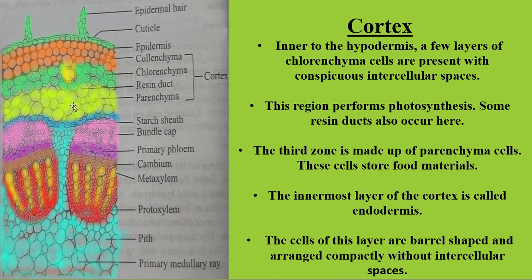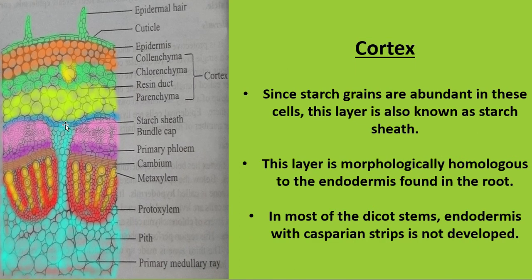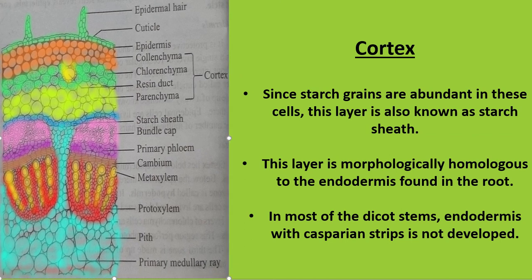Inner to the cortex region, the endodermis cells are present. The cells are barrel-shaped and arranged compactly without any intercellular space. These endodermis cells also store starch grains — the dot-like structures visible in the cells — so it is also called the starch sheath. In most dicots, the Casparian strip is absent, which is usually found in the endodermis layer of roots.